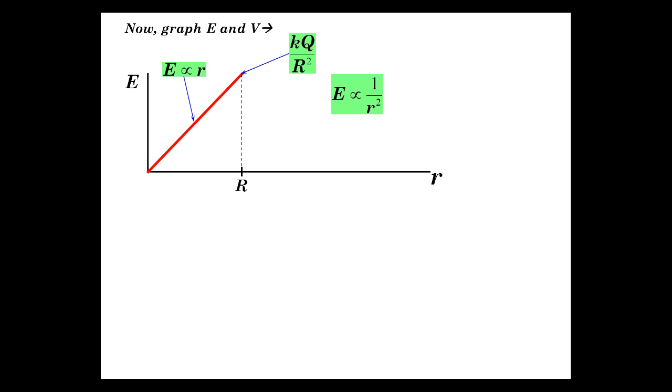Well now let's graph the electric field and potentials in all of space. So starting with the electric field, from zero to big R, we noticed that the electric field formula was proportional to r. So there it is. And then outside of the sphere, it acts like a point charge following the inverse square law, and there it is.